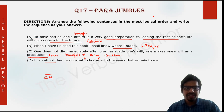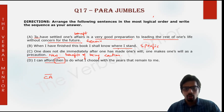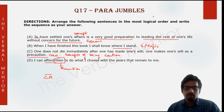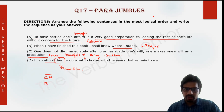Sentence D says: 'I can afford to do what I choose with the years that remain to me.' Note that sentence B says: 'When I have finished this book, I shall know where I stand — I can then afford...' This 'then' refers to completion of the book. After completing the book, I can choose what to do with the years that remain to me. So B and D form another concrete pair.